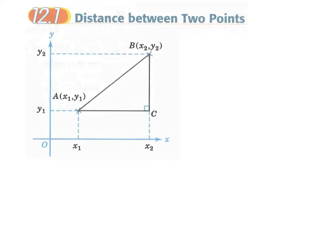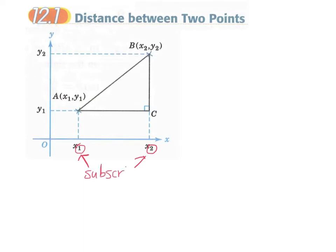Distance between two points. Let's say we have an xy coordinate plane — this is the x axis and this is the y axis. This is line AB, where point A has coordinates (x1, y1) and point B has coordinates (x2, y2). We call these subscripts. In coordinate geometry, we have numbers — xy coordinates — at the vertices of lines or triangles, so it is the application of algebra to geometric objects.